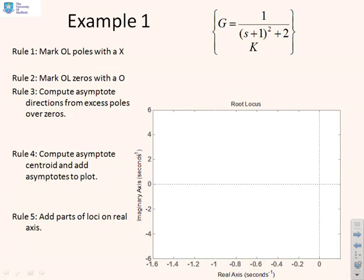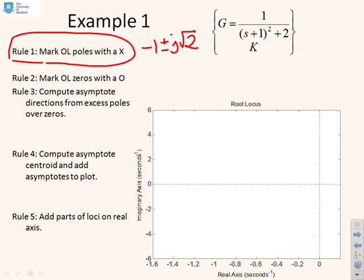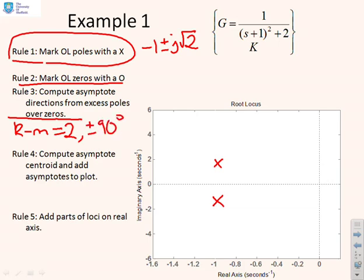First example: g equals one over (s+1)² plus two. Rule one: the poles are at minus one plus and minus j root two — mark them with a cross at those locations. Rule two: there are no open-loop zeros. Rule three: the excess of poles over zeros, k minus m, is two, so we get plus and minus 90 degrees for the asymptote directions.